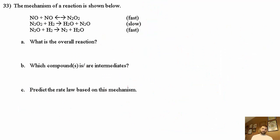Number 33: the mechanism of a reaction is shown below. You got a fast step, a slow step, and another fast step. What is the overall reaction? You have to look at the intermediates and figure out what cancels out.